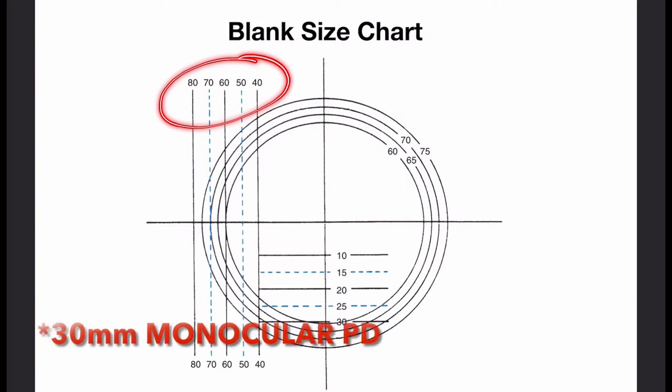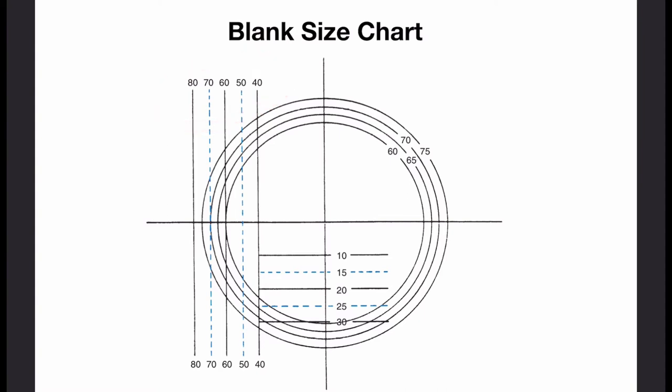Take, for example, a 30mm right eye PD would align with a 60mm line on the chart. Most charts mark the lines with binocular measurements now, but this is the one referenced in the Systems textbook, and it does not.